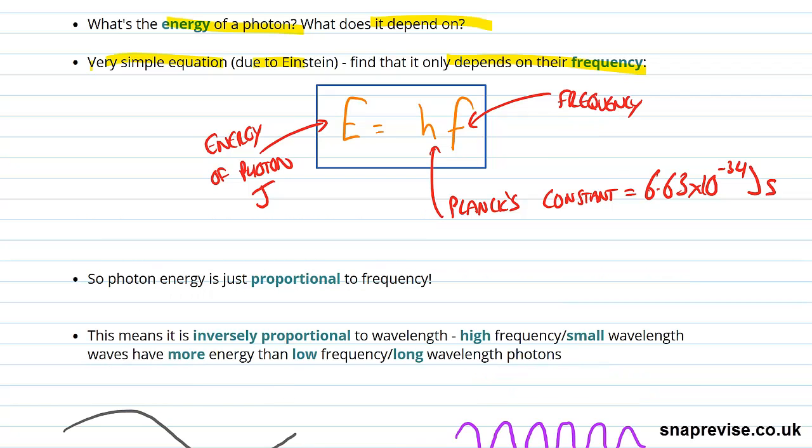With this remarkably simple formula, we just see that photon energy is just proportional to the frequency of photons, which is a very simple way of finding its energy.